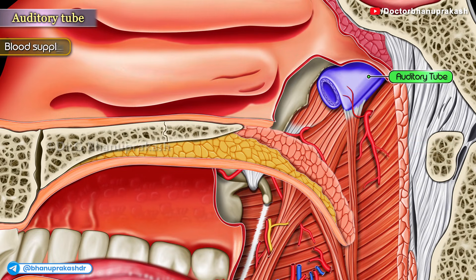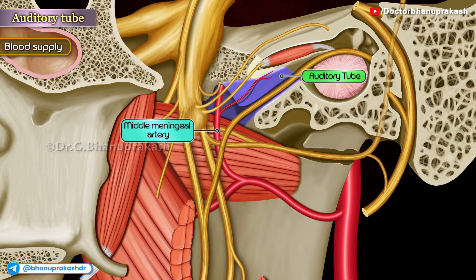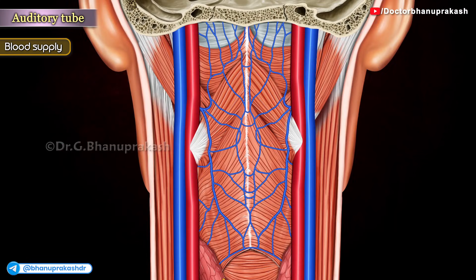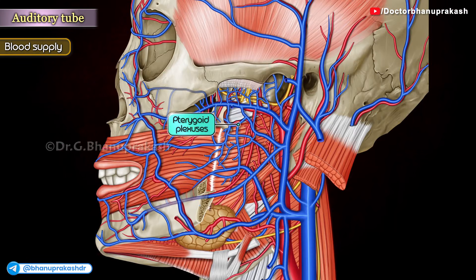Blood supply: The arterial supply of the tube is derived from the ascending pharyngeal artery, the middle meningeal arteries, and the artery to the pterygoid canal. The veins drain into the pharyngeal and pterygoid plexuses of veins.